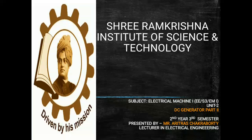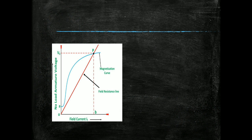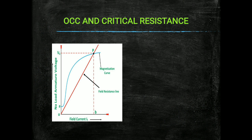I am Aritya Chakraborty. Today I am going to discuss DC Generator Part 2. The first slide is about the open circuit characteristics and critical resistance of a DC generator. In this image we can see there is a graph between field current and no-load armature voltage, that is the induced EMF, and a blue colored graph is plotted, which is known as the open circuit characteristics curve or magnetizing curve.